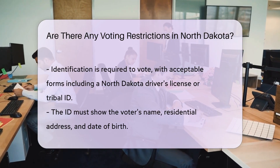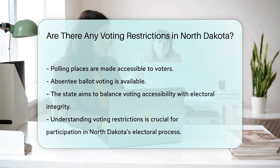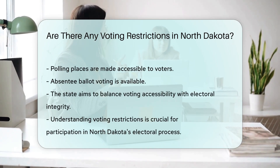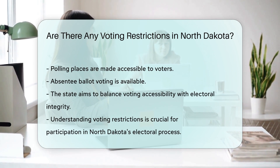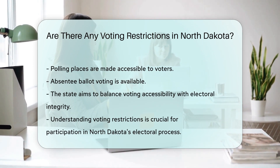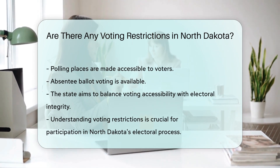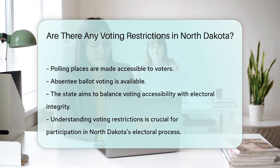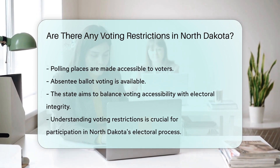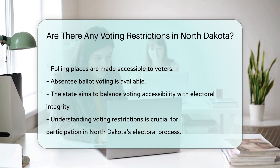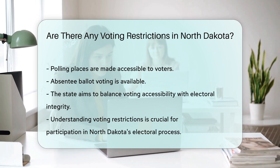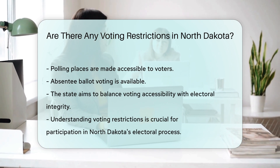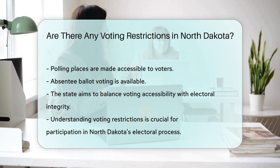Polling place accessibility and the ability to vote by absentee ballot are accommodations made to ensure broader participation. Despite the lack of voter registration, these measures aim to maintain the integrity and accessibility of the voting process. Understanding these restrictions and requirements is crucial for ensuring one's ability to exercise the right to vote in North Dakota. The state's approach, while distinct, aims to balance accessibility with the need to maintain electoral integrity.